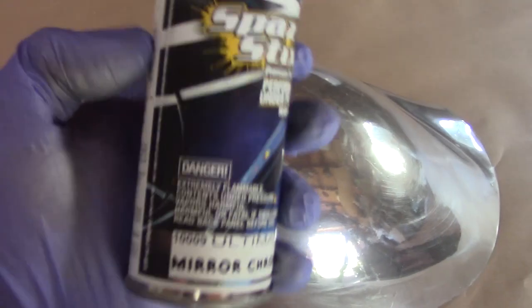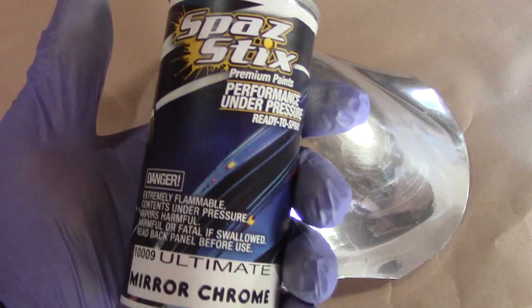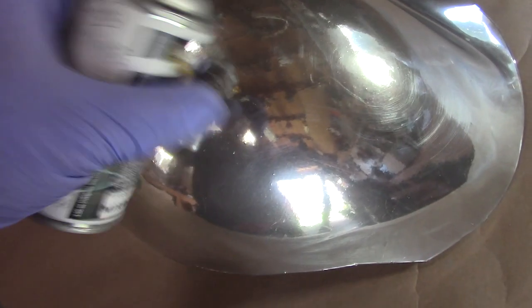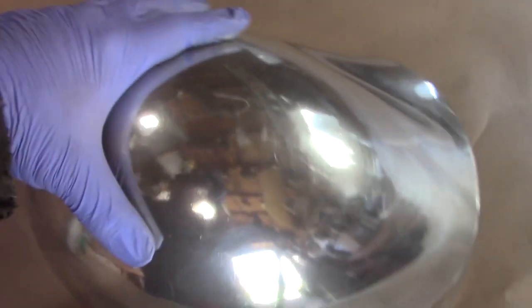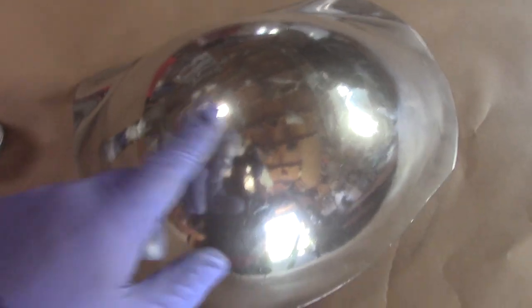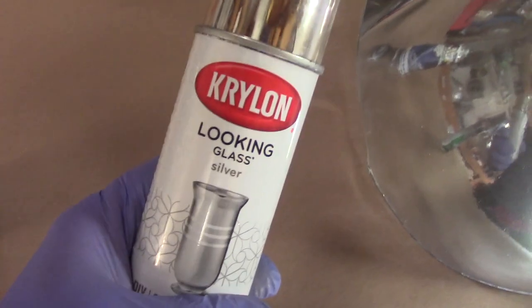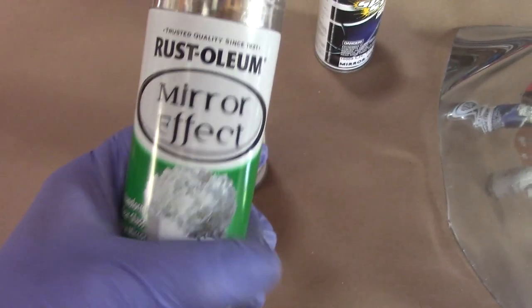And this is no camera trick. This is the chrome dome. And that's very simply it. Spaztex is the best chrome I've been able to find for doing this treatment on clear parts. Again, you can use Looking Glass, not as shiny. Mirror Effect, not as shiny. Both very good if you couldn't find Spaztex. But this is what I highly recommend.